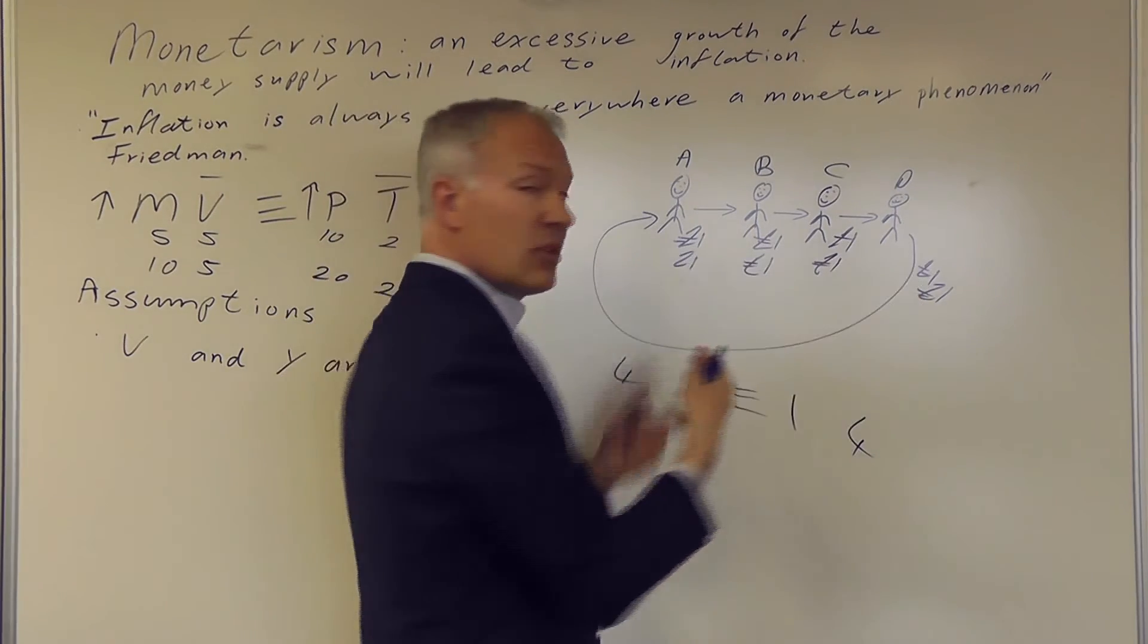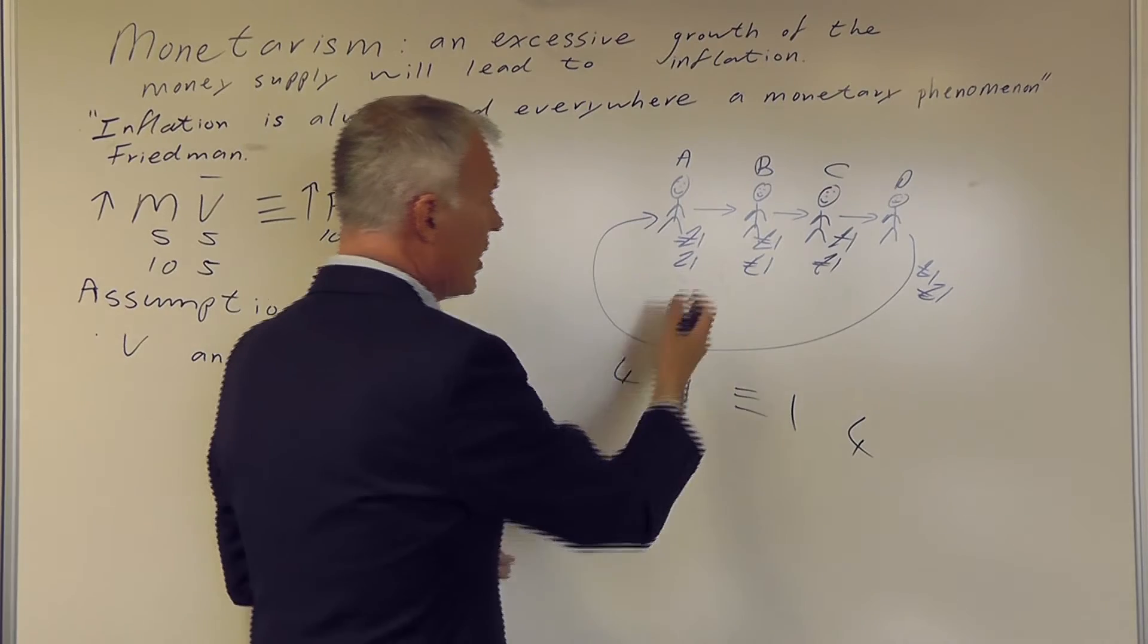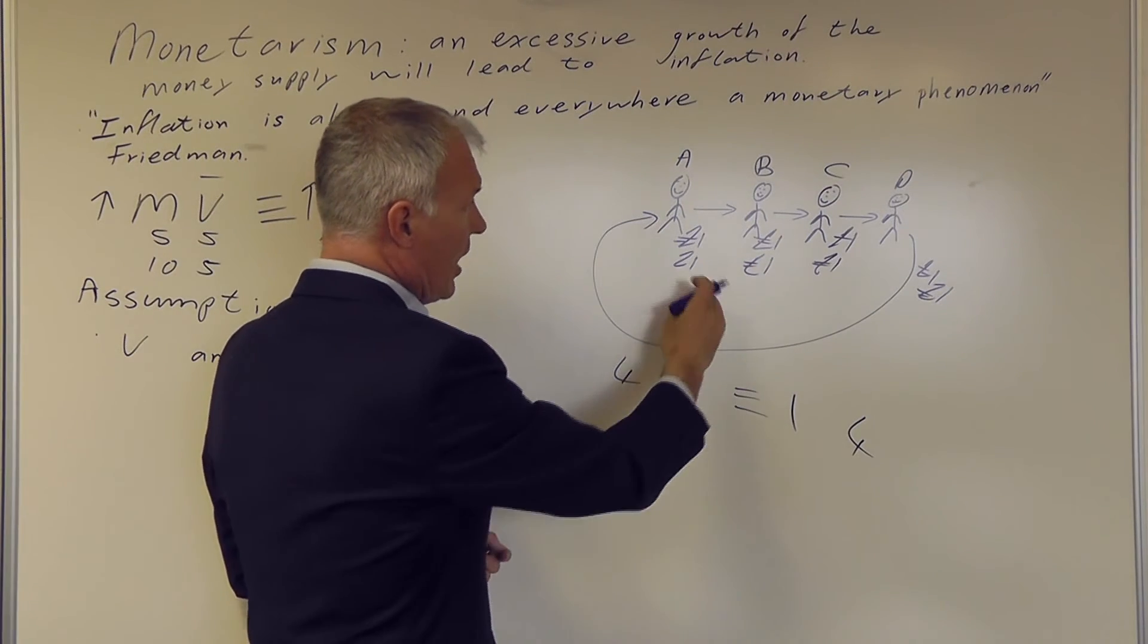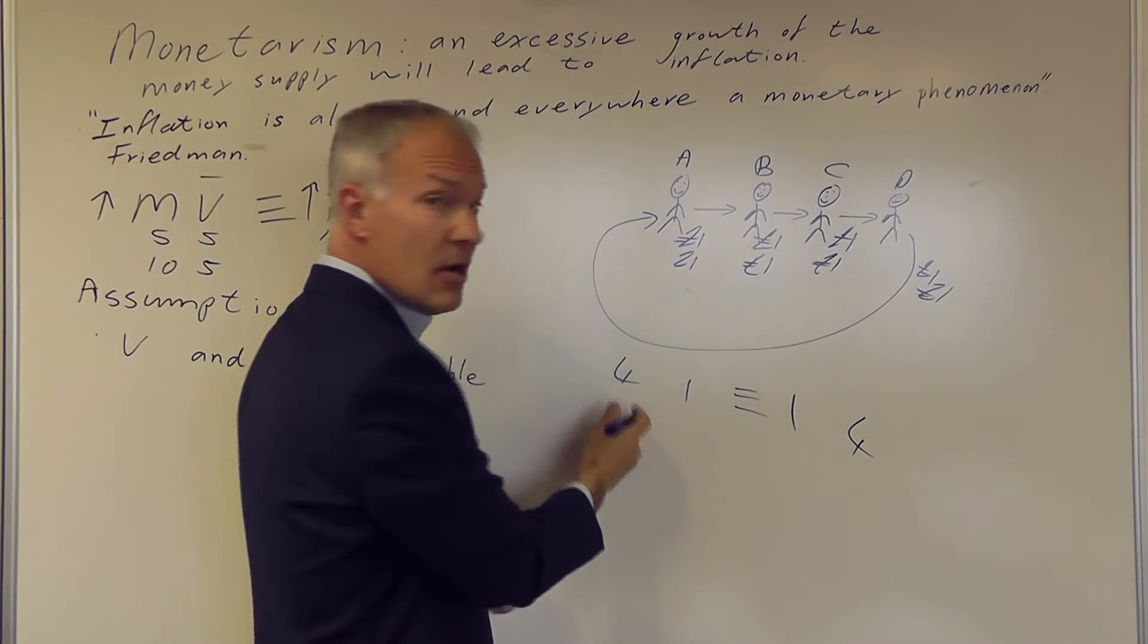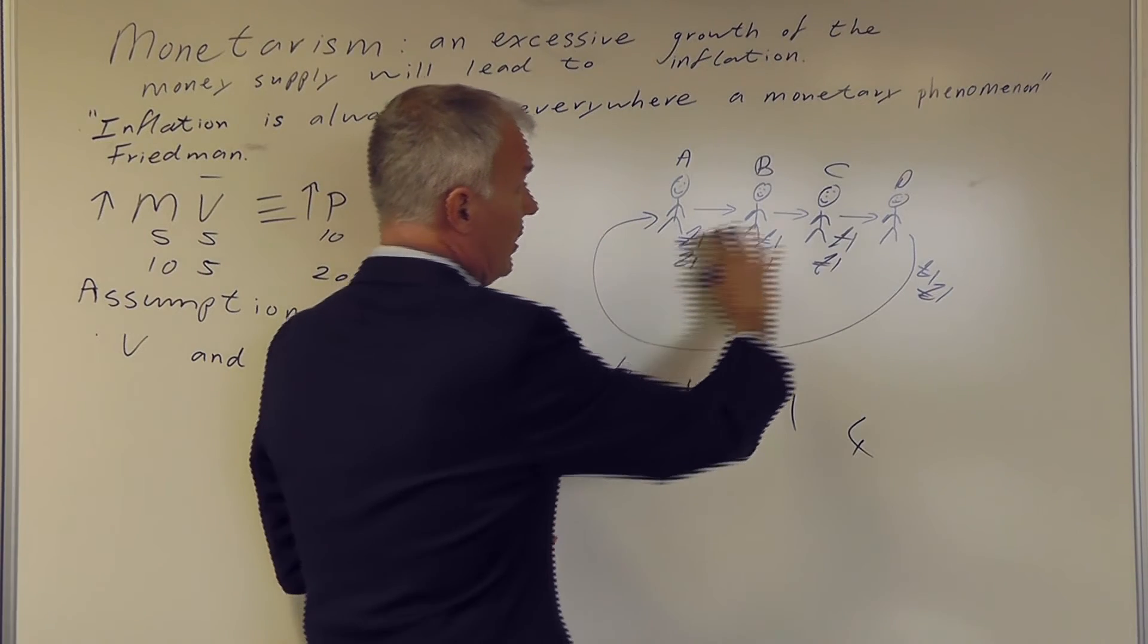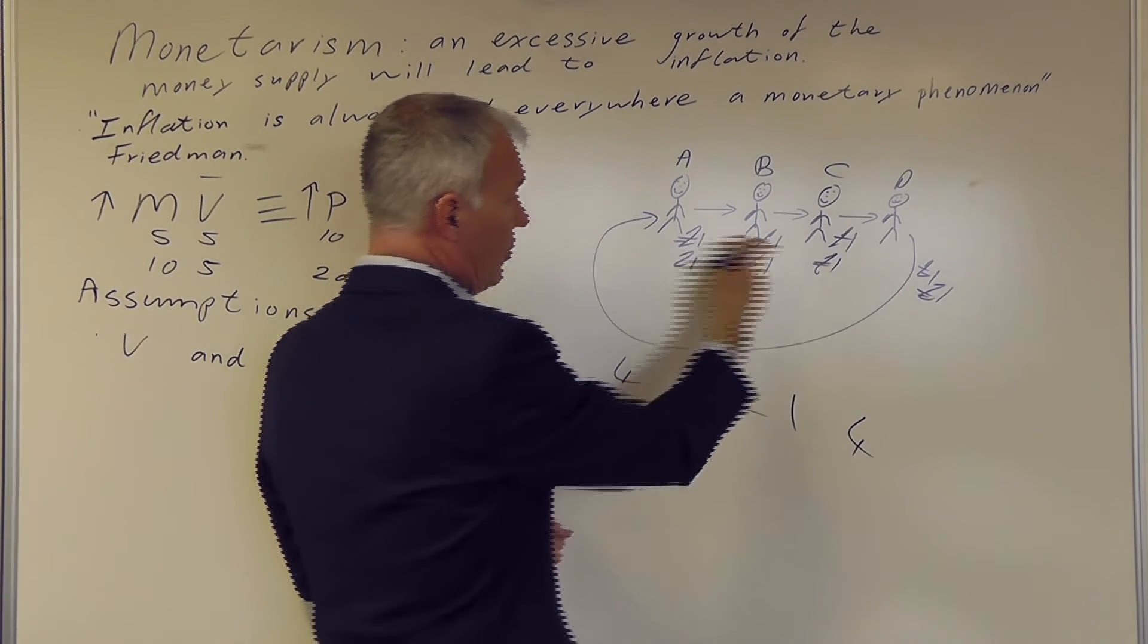So they each have twice as much money, but they're not better off. So we now have the money supply is now 8. The velocity of circulation is still 1.